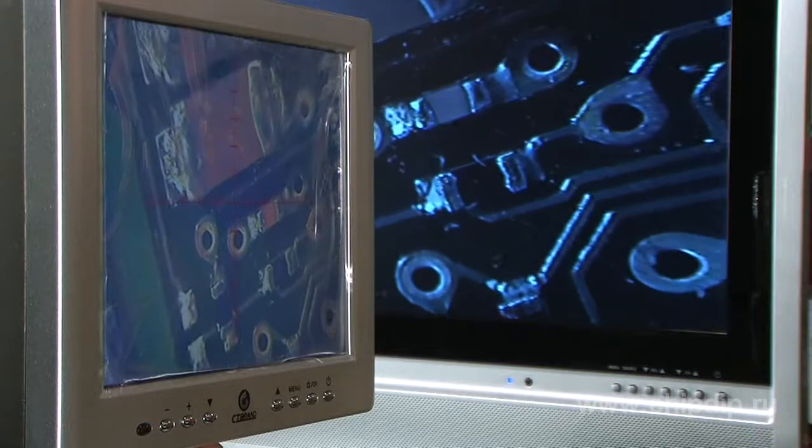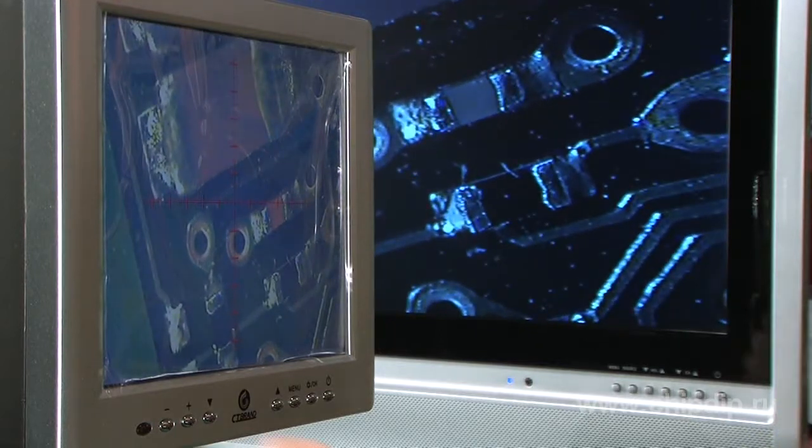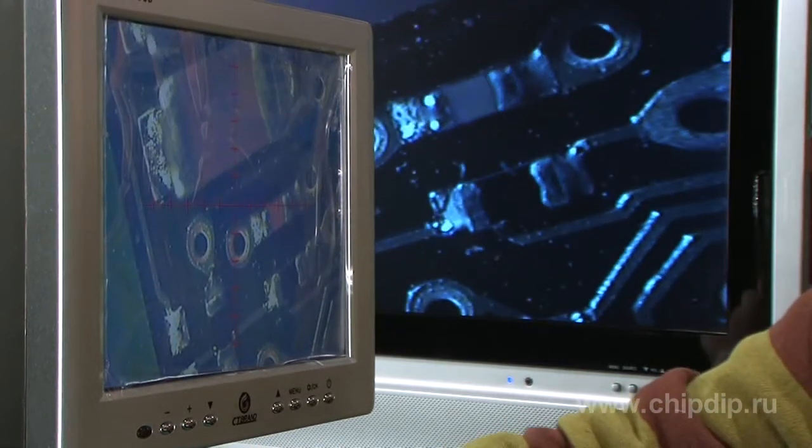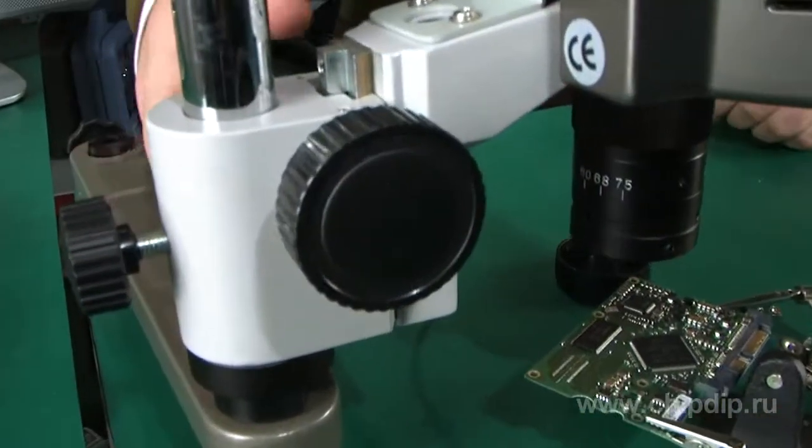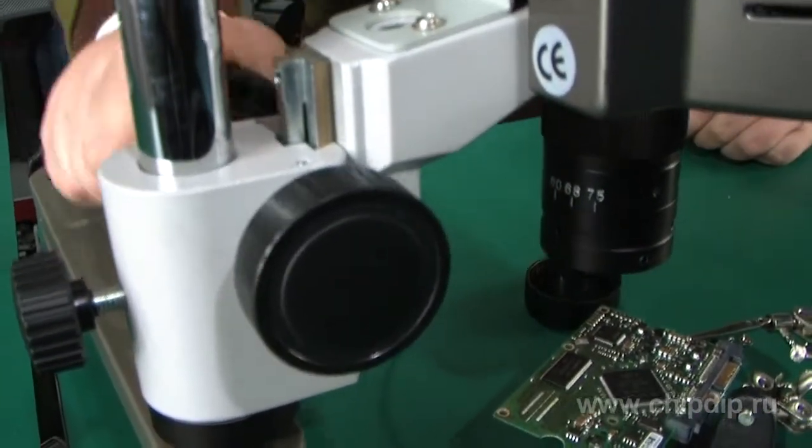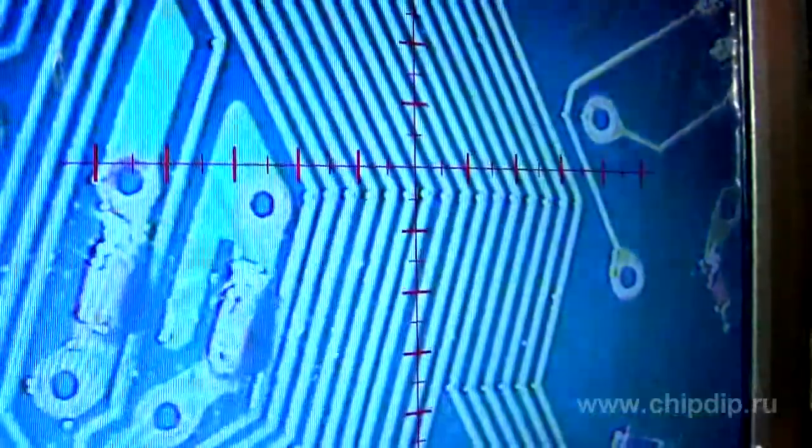There is a menu in Russian. After setting the options, we tune the system and select the desired magnification according to the marking. By turning the knob, we adjust the height at which the lens is located.